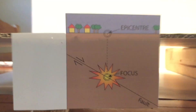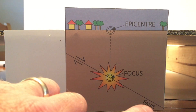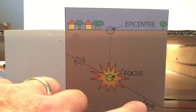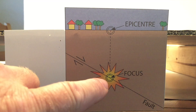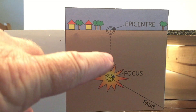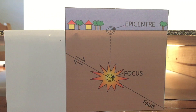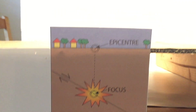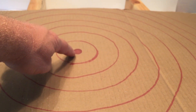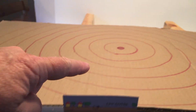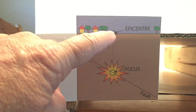The epicenter is the point on the Earth's surface that is directly above the hypocenter, or focus. You initiate at the focus and then go straight up to the epicenter. I set up my experiment with a piece of cardboard, and the red circle right there is the epicenter — where most of the earthquake energy is going to hit at the focal point.